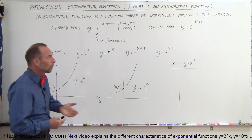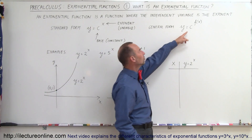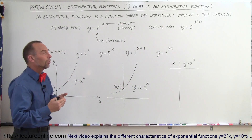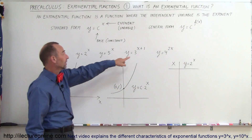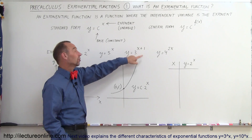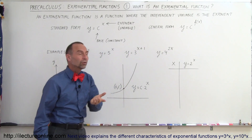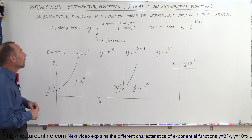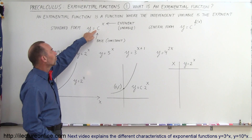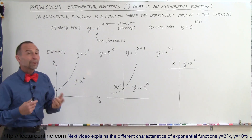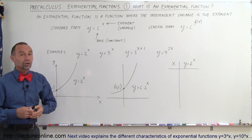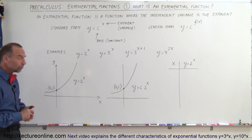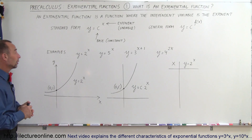The general form can be written as y equals c to the function of x, because it doesn't have to be a constant raised just to the x power. Sometimes we can have x plus 1 as the exponent, or 4 raised to the 2x exponent. Of course we could use another independent variable — t for time, x for distance, or simply x for quantity.